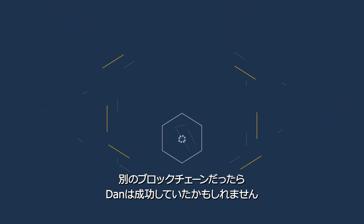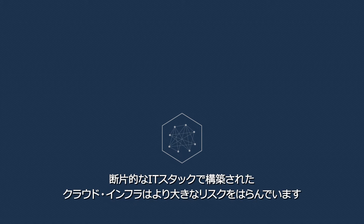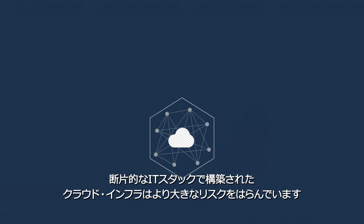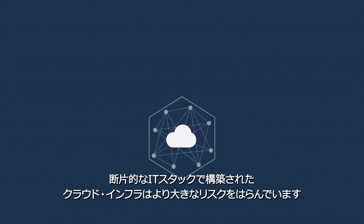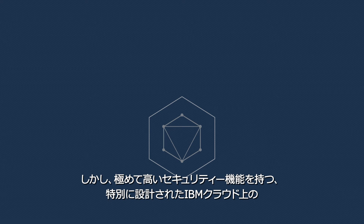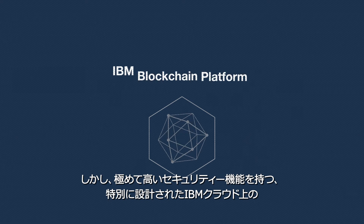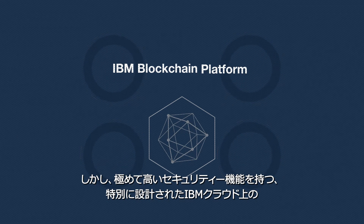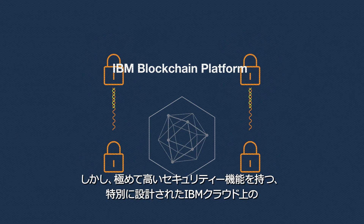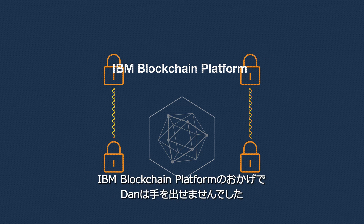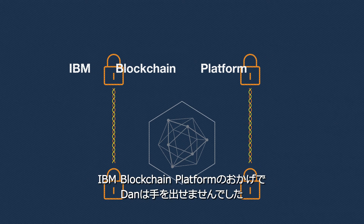Dan might have succeeded if another blockchain was in place. Cloud infrastructures built on piecemeal IT stacks are at greater risk. But thanks to the IBM blockchain platform — a service designed specifically for high security blockchain networks on the IBM cloud — Dan isn't getting in.